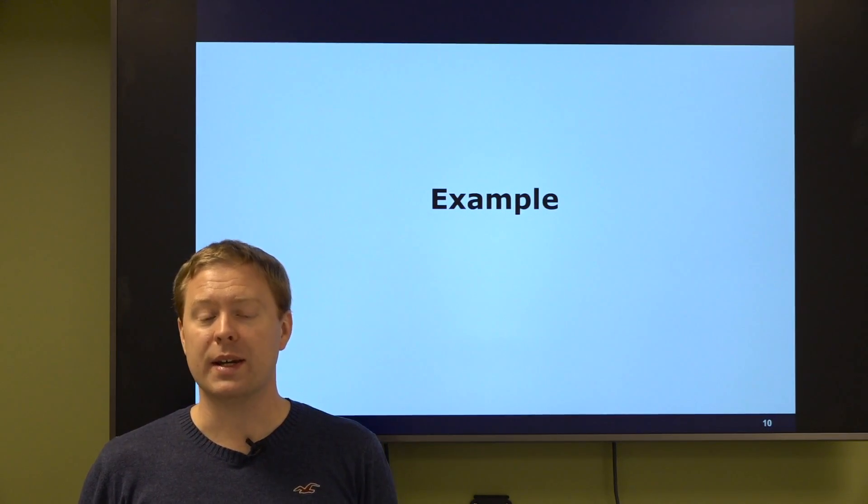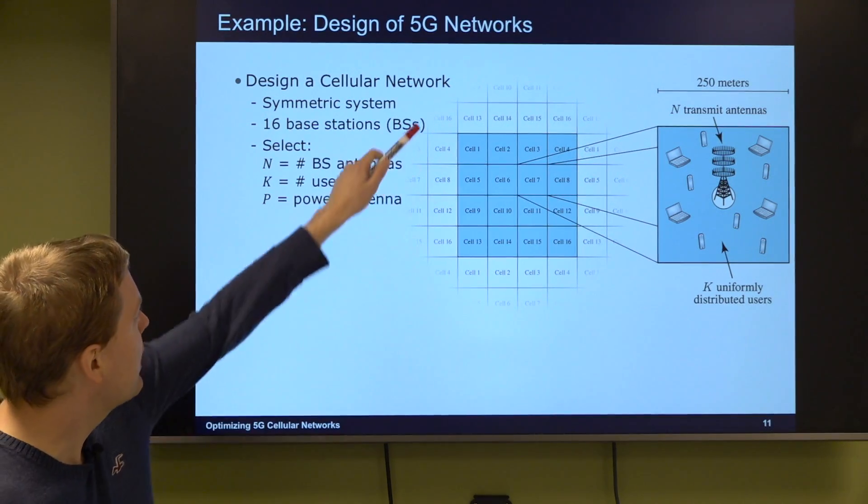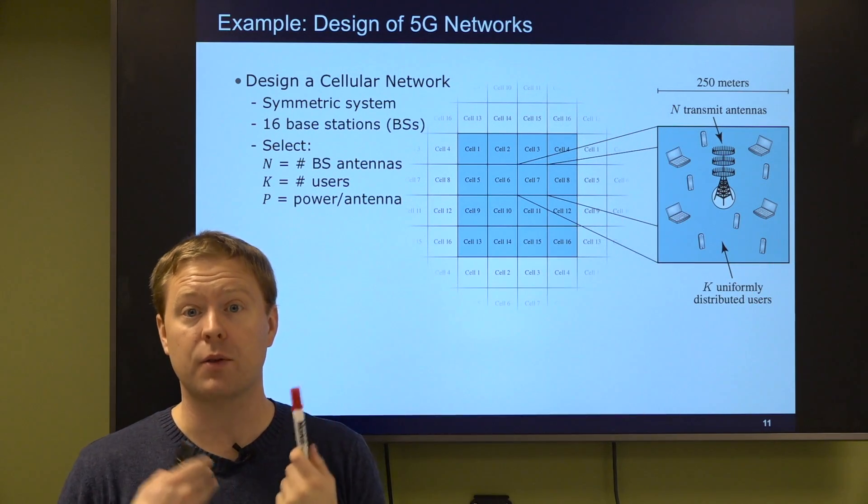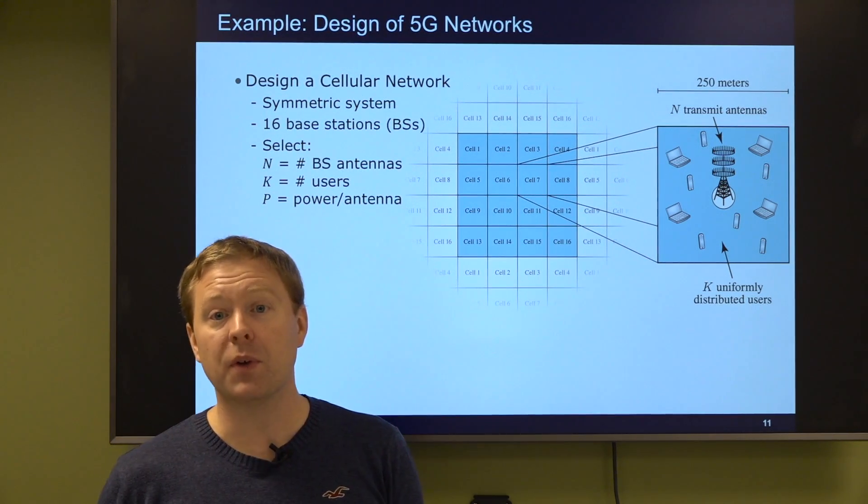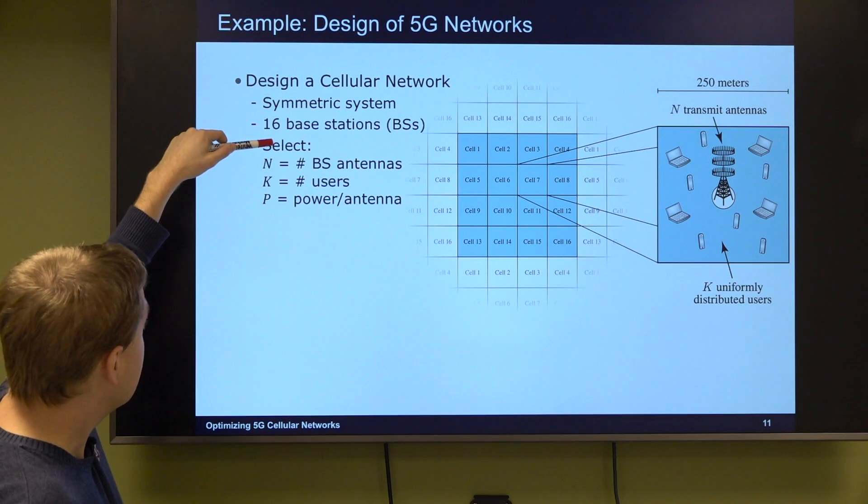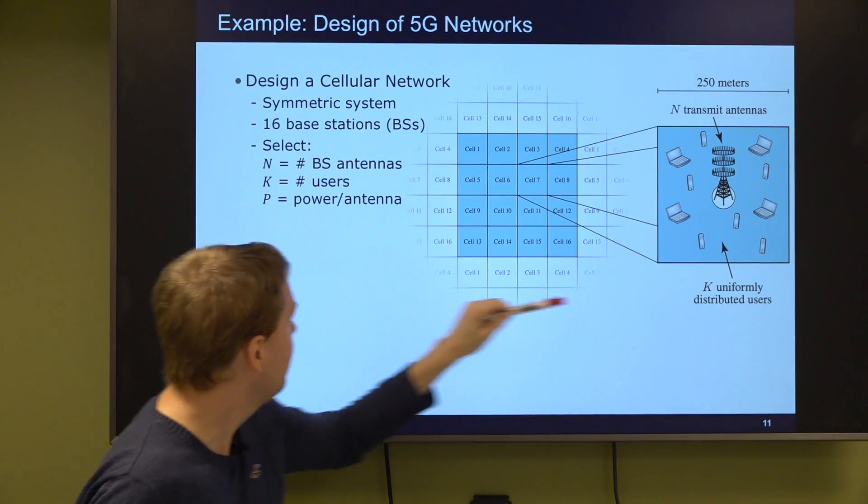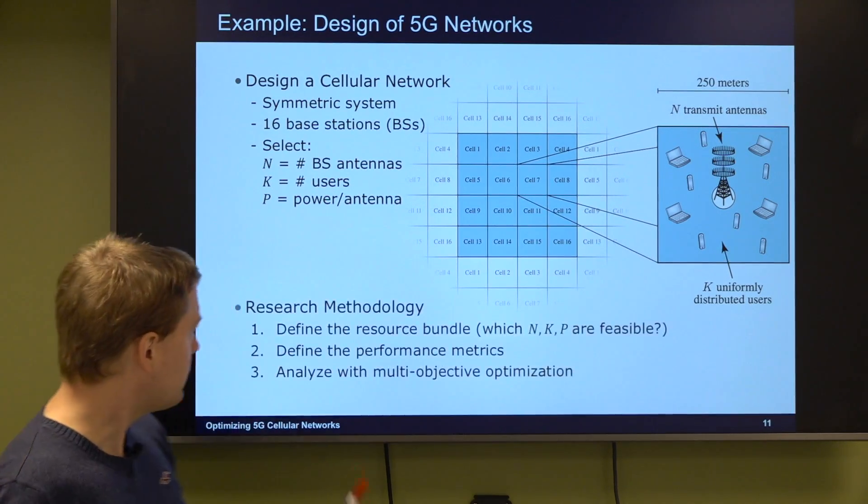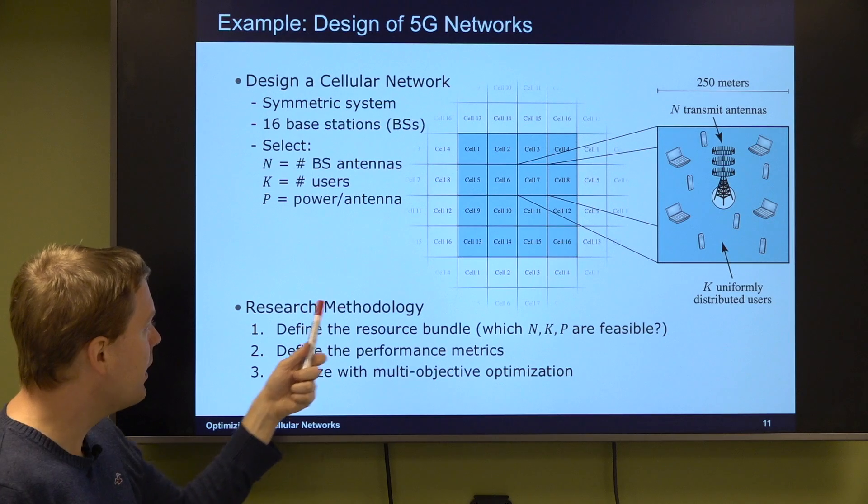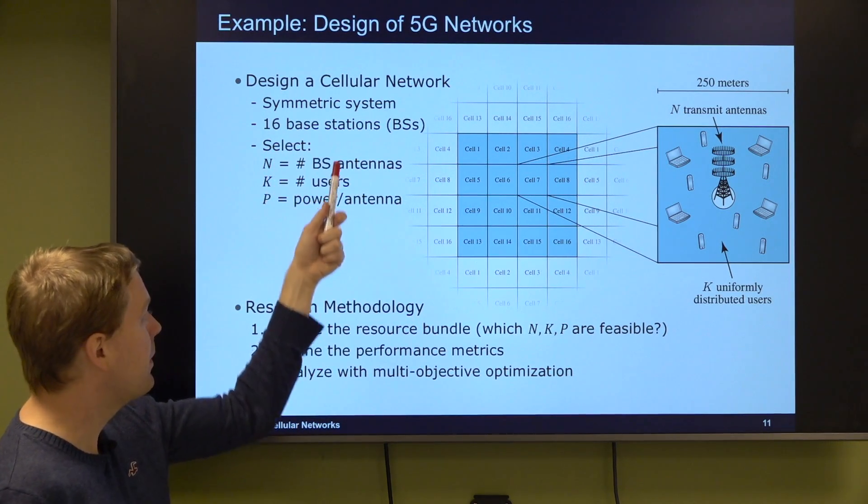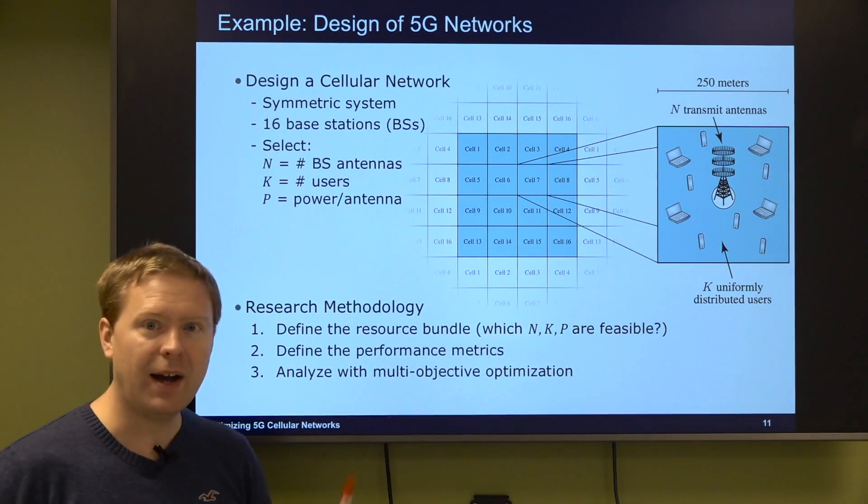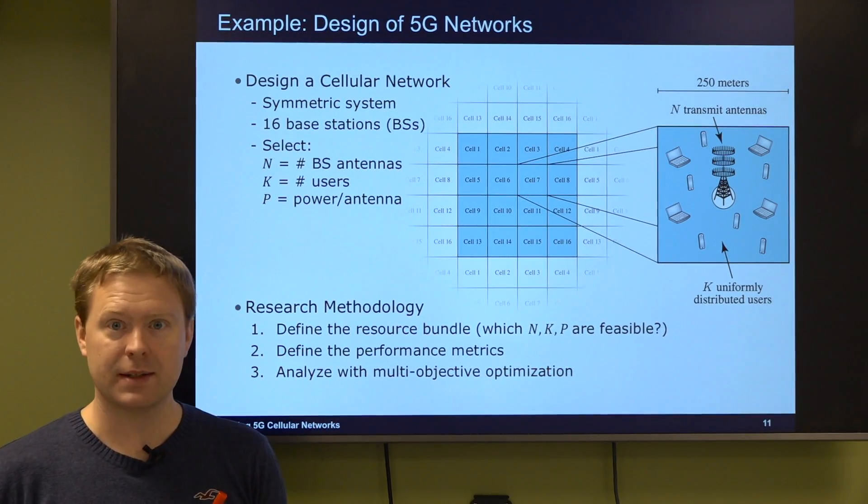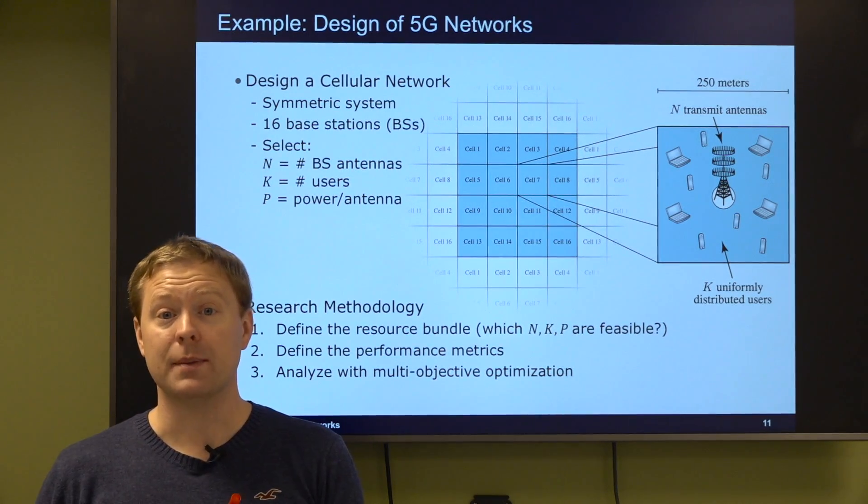Let me finalize this video with an example. Designing a 5G network where we have 16 different cells, each one contains a base station with n antennas and k uniformly distributed users. Then what can we select? We can select the number of antennas on the base station, the number of users that we have in the cell, and the power per antenna at the base station. The research methodology will then be define the resource bundle, which values on n the number of antennas, k the number of users, and p the power per antenna are feasible. Then we define the performance metrics. Finally we analyze the problem with multi-objective optimization.